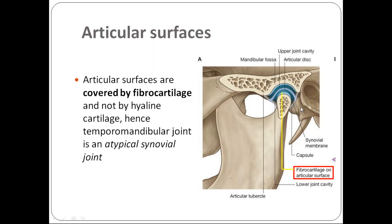Like any other joint, the TMJ has a fibrous capsule. Inside the fibrous capsule is the synovial membrane. The next structure is the articular disc. The third is the lateral ligament of the temporomandibular joint, also called the temporomandibular ligament. There are also two accessory ligaments: the sphenomandibular ligament and the stylomandibular ligament.